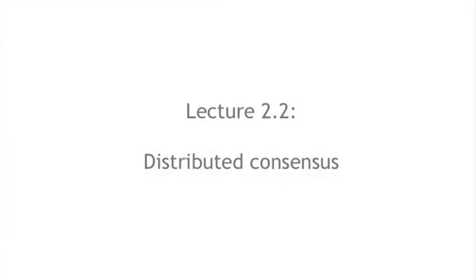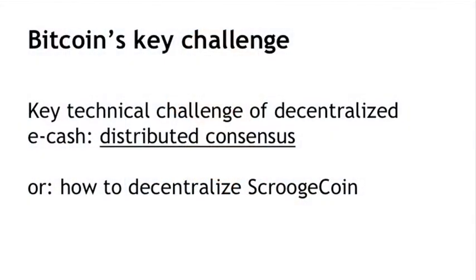We've talked in a generic manner about centralization and decentralization. Let's now talk at a bit more technical level about Bitcoin and decentralization. A key word that's going to come up again and again here is consensus — specifically distributed consensus. At a technical level, the key challenge you have to solve to build a distributed e-cash system is called distributed consensus, a class of protocols that's been studied for decades in the computer science literature.